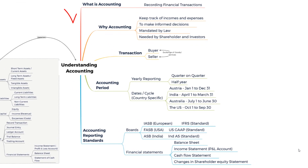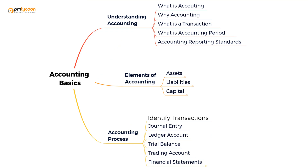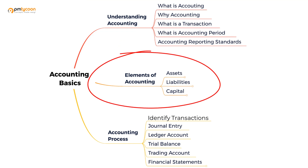So far we've understood what accounting is, why it is needed, what a transaction is, what an accounting period is, what a board is, what an accounting standard is, and what some of the financial statements are. Now let's look at the elements of accounting — we are slowly getting into the meat of the subject.